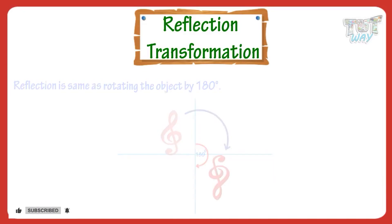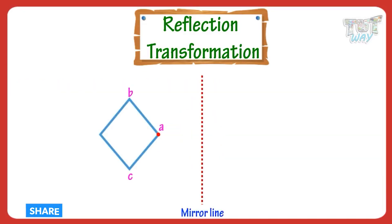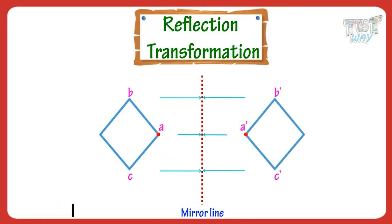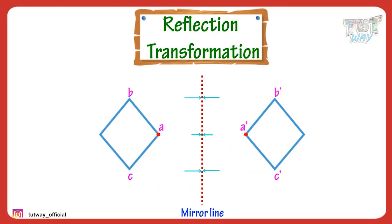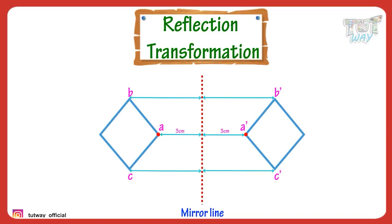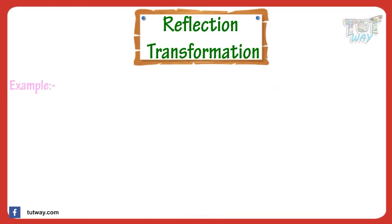Points on an image and its reflection are equidistant from the line of reflection or mirror line. When a point is reflected in a mirror line, the point and the image of the point are equidistant, or the same distance from the mirror line. Let's have a look at examples.